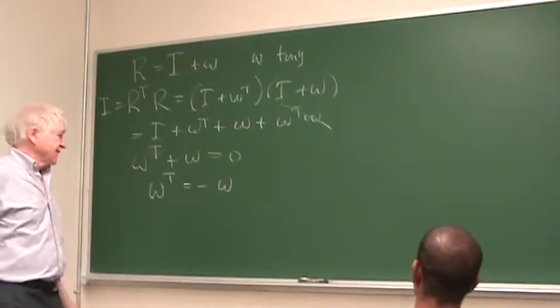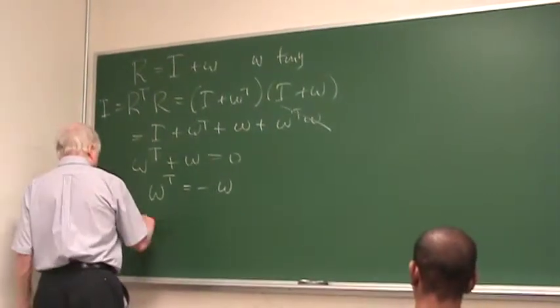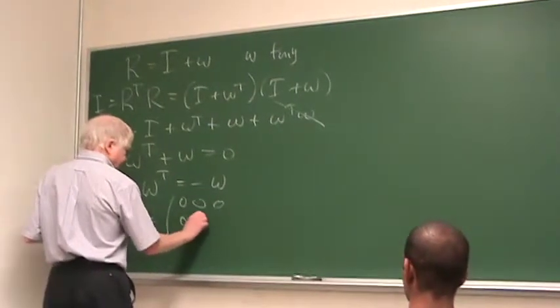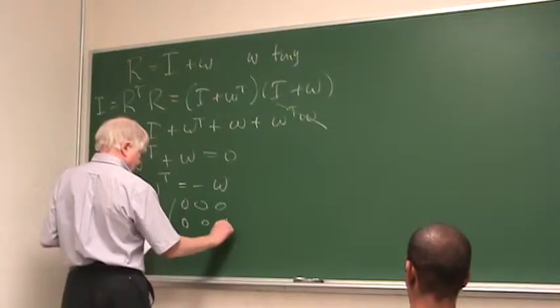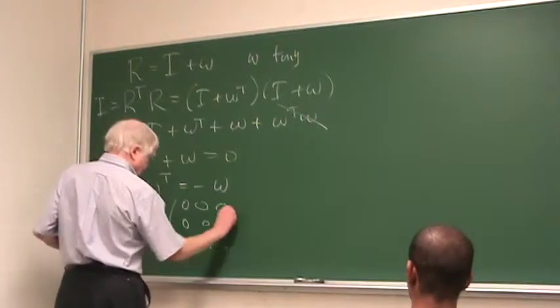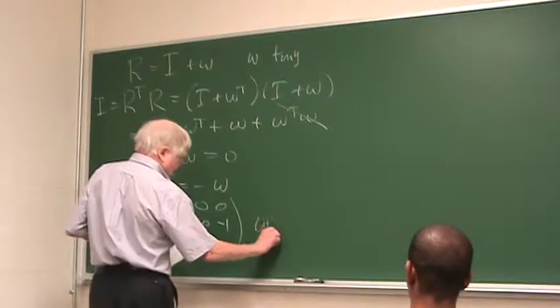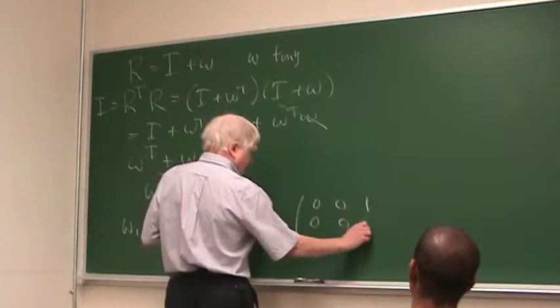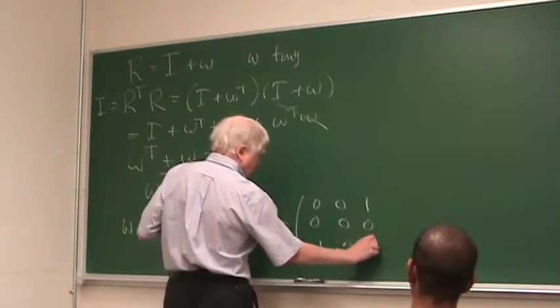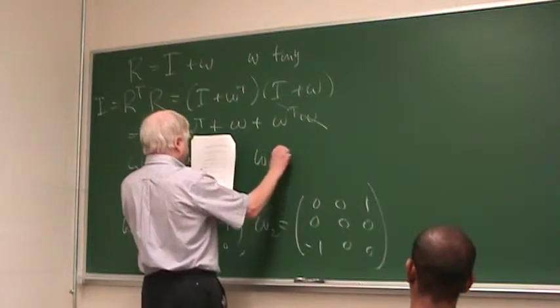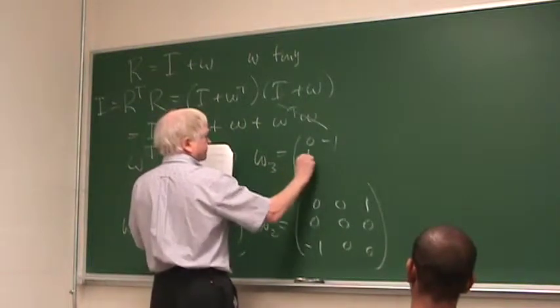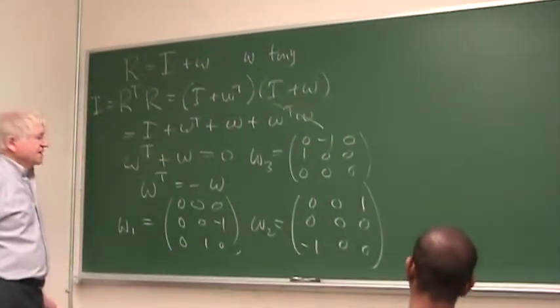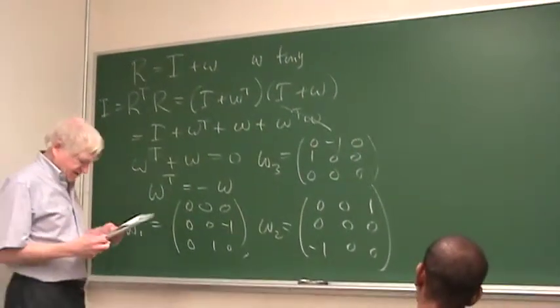So the generators should be omega transpose minus omega. These are three by three matrices, and so we can write them this way, omega one. There's nothing sacred about this representation. So here are three matrices. They're all anti-symmetric. These are the three generators.